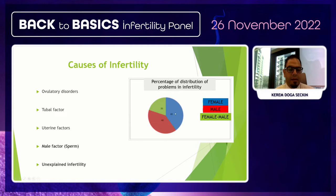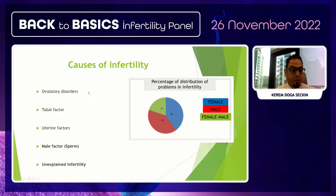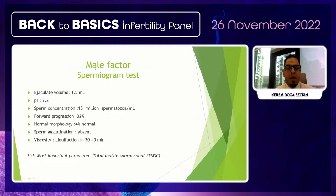When we look at the percentage distribution of infertility causes, men and women have the same proportion of problems. Causes include ovulatory disorders for women, tubal factors, uterine factors, and male factors. When no clear cause can be identified, we classify these as unexplained infertility.